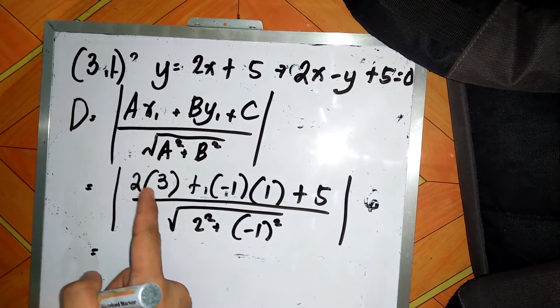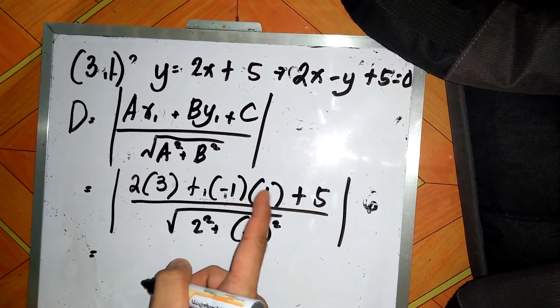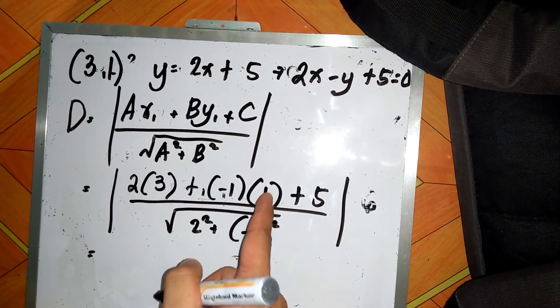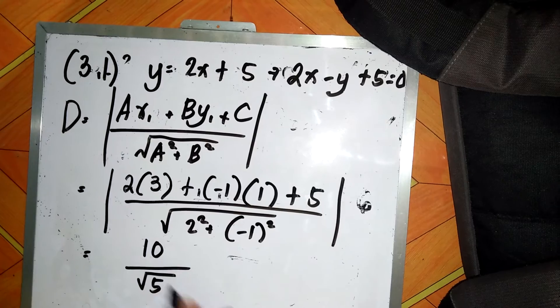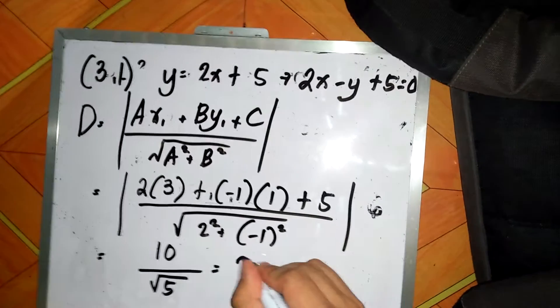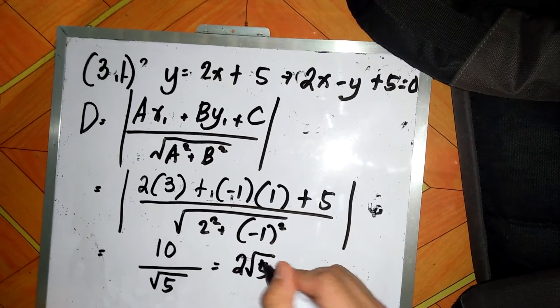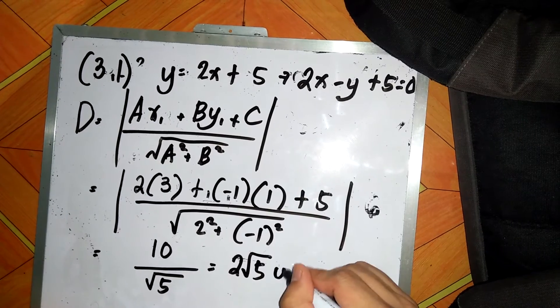So this will become 2 times 3, 6, negative 1 times 1, that is negative 1, 6 minus 1 is 5, plus 5, 10 over square root of 5. So if we simplify this further, we will obtain 2 square root of 5 units.